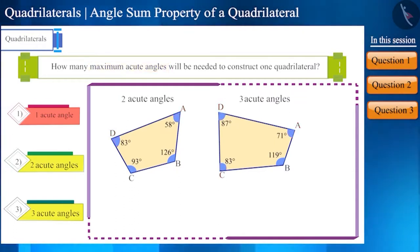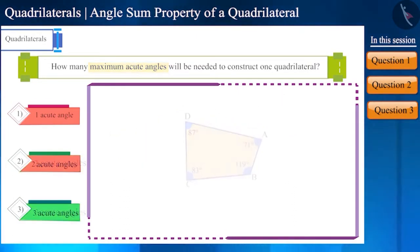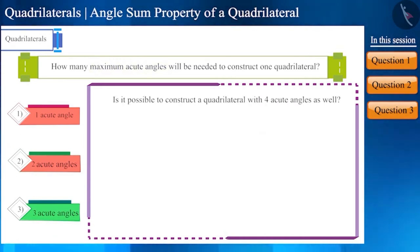According to the question, we have to find the maximum number of acute angles, so the correct option will be three. But friends, is it possible to construct a quadrilateral from four acute angles? You can throw light on this with the help of your teacher and classmates.